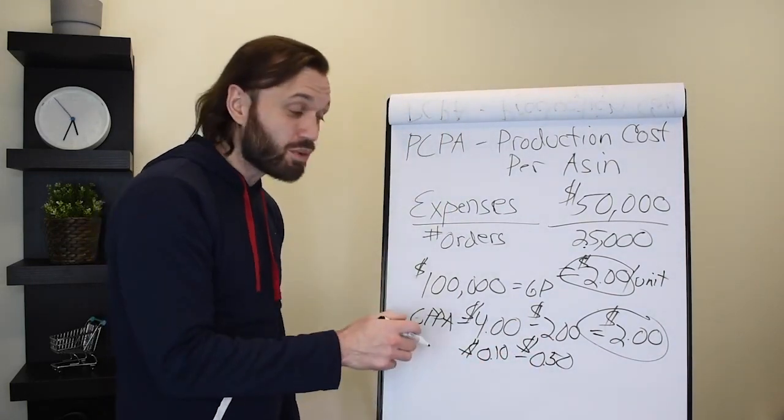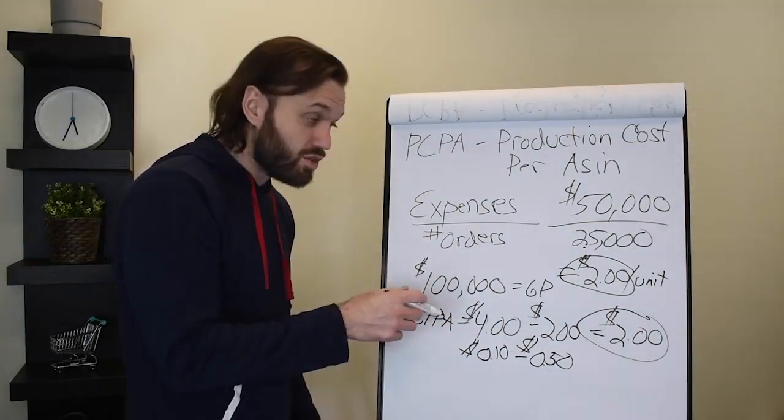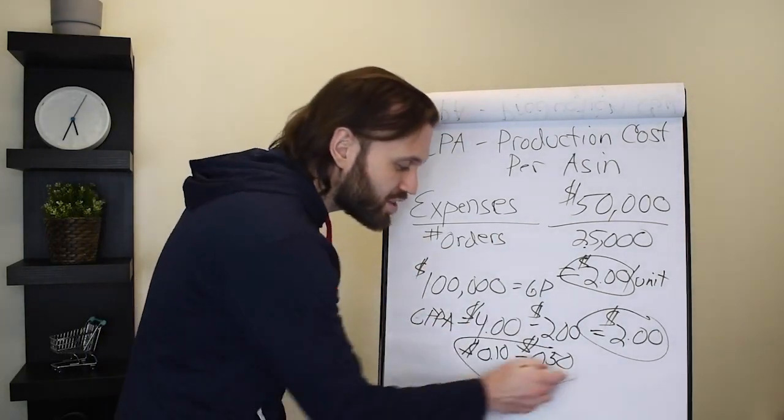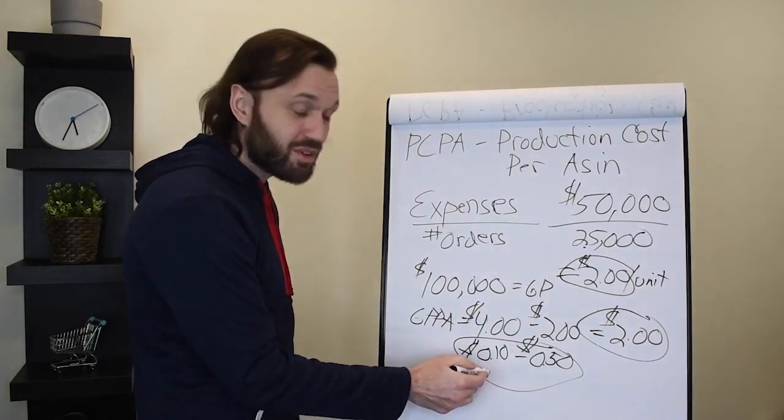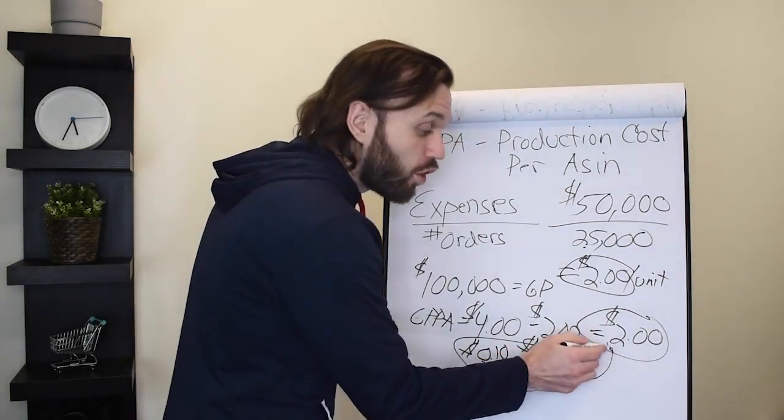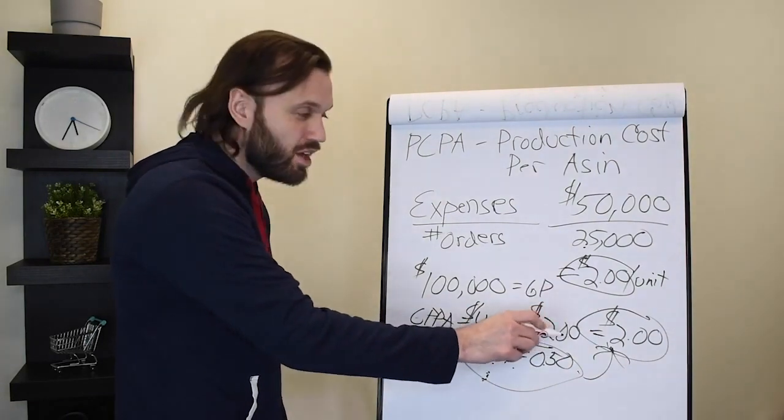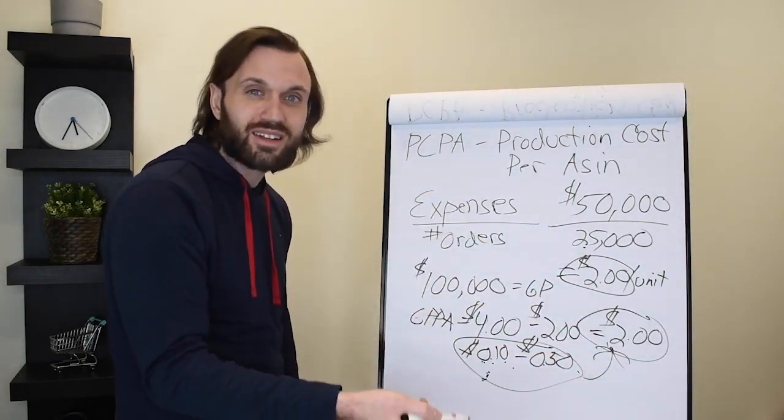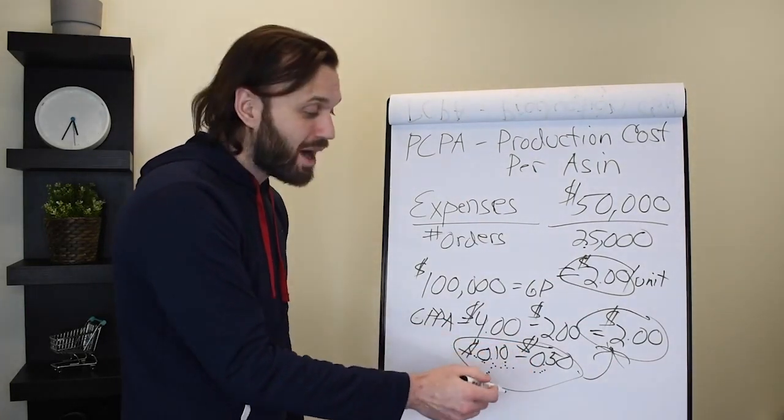But the struggle comes in where most of the companies we analyze, they're closer to 10 cents to 50 cents net profit per ASIN. That's where you run into an issue, because then your company is not very profitable at all and you're doing a lot of work for not a lot of money. You don't want to be in this position. Most of the companies that contact us to analyze their company's health are in this position. Our goal as consultants is to get them out of this position and get them closer to or above this position, because this is when your company's healthy—when you're profiting a couple dollars every time you sell a product in net profits. If you're in this position, your business is in trouble.